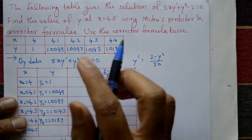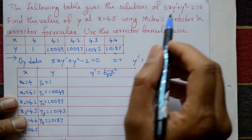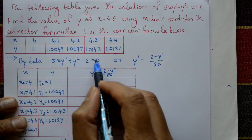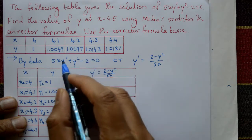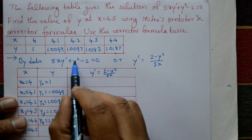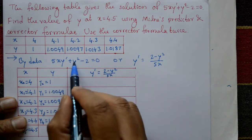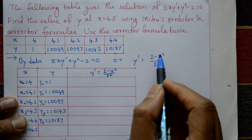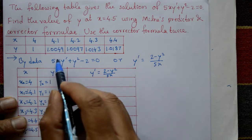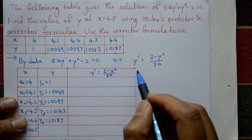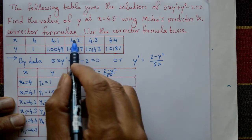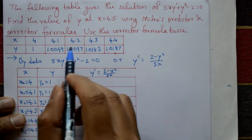The given function is 5xy' + y² - 2 = 0. We need y'. Rearranging: y' = (2 - y²) / (5x). The given x values are x0, x1, x2, x3, x4 and corresponding y values are y0, y1, y2, y3, y4.